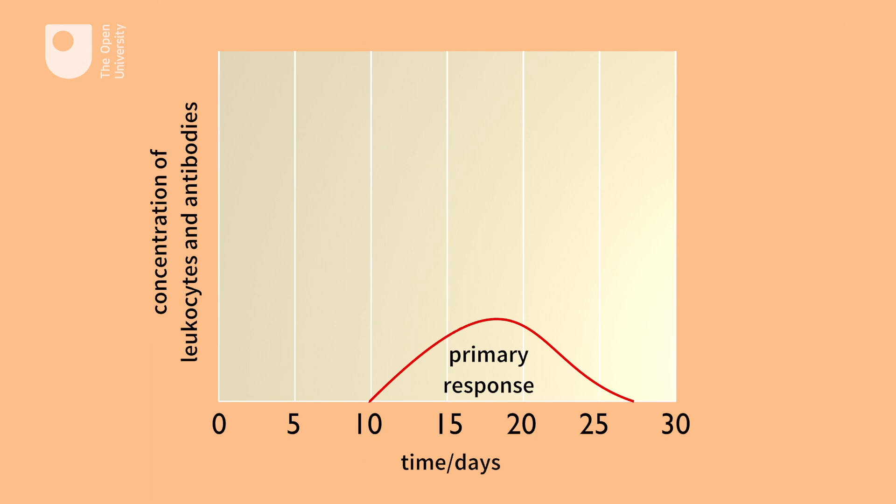In this case, after infection at time zero, it takes less than five days for antibody and leukocyte numbers to start increasing. The production of antibodies and leukocytes lasts for over 30 days and it is a noticeably larger increase compared to the increase seen in our primary response.